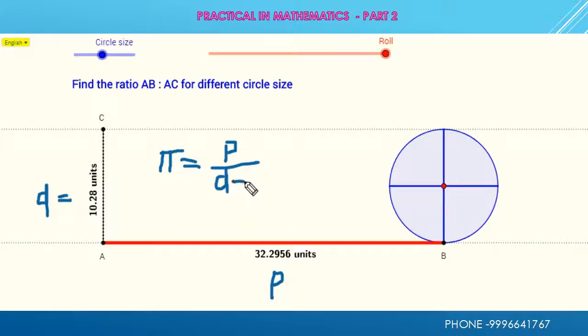But you know that this D is equal to 2R, meaning 2 times radius is equal to D. So by cross multiplying, we get P is equal to 2πR. Therefore, perimeter of circle is equal to 2πR.